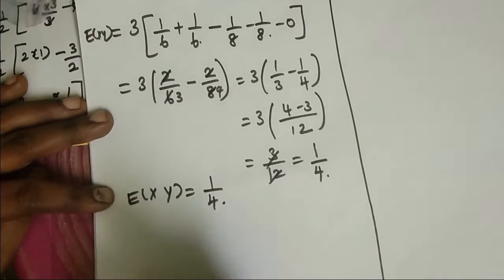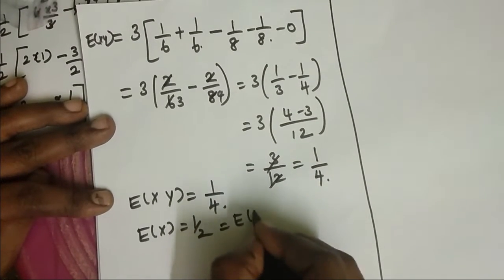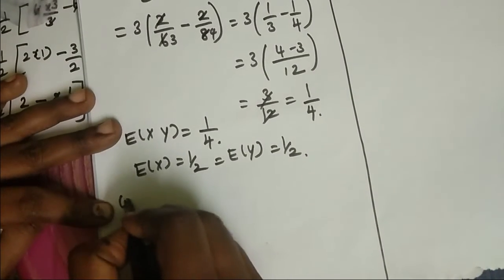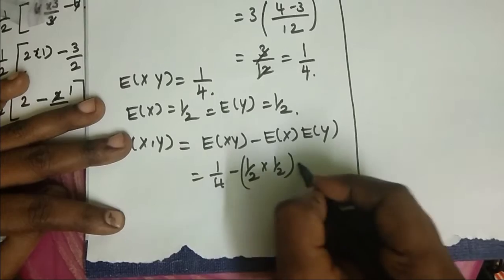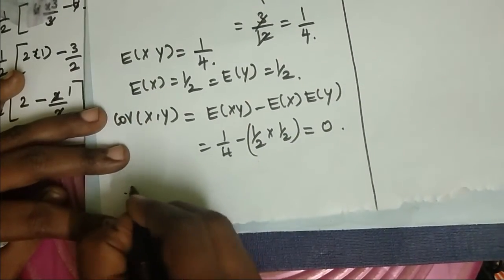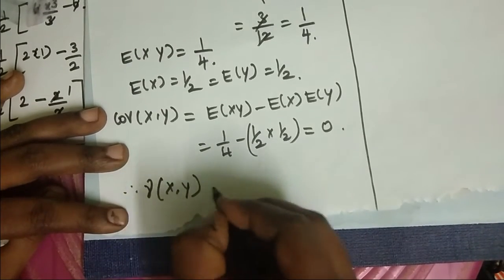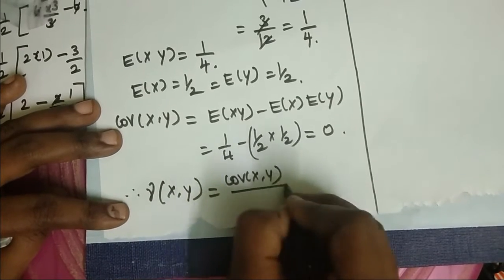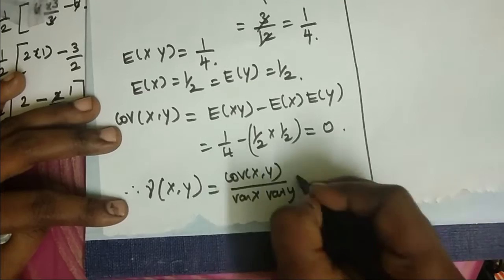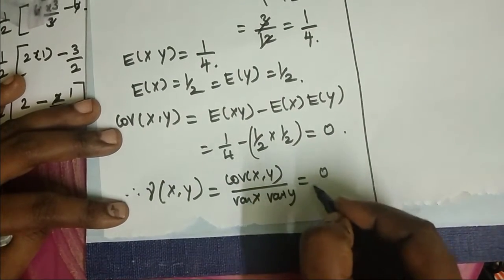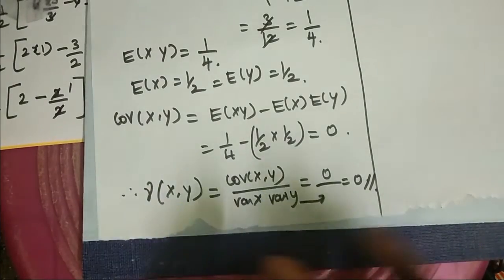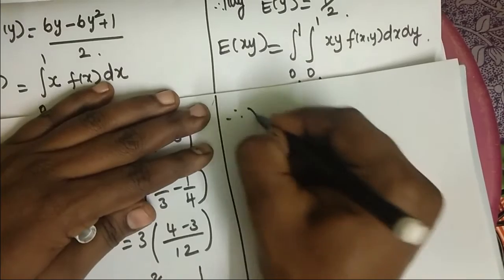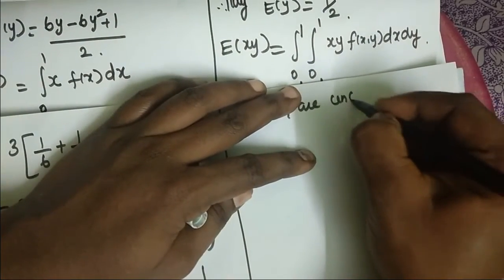Now, Cov(x, y) = E(xy) − E(x)·E(y) = 1/4 − (1/2)(1/2) = 1/4 − 1/4 = 0. Since the covariance is 0, the correlation coefficient ρ = Cov(x,y) / √(Var(x)·Var(y)) = 0. Therefore, x and y are uncorrelated.